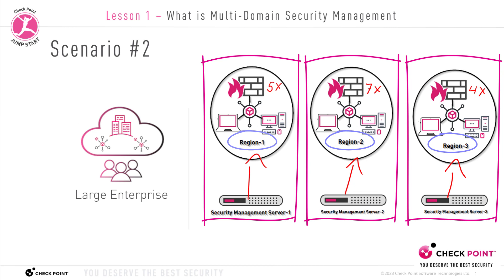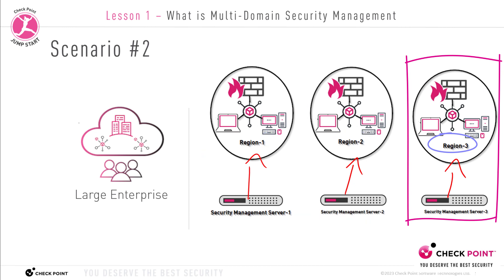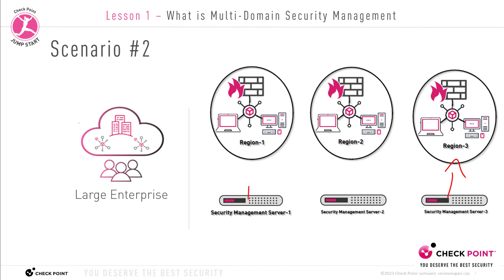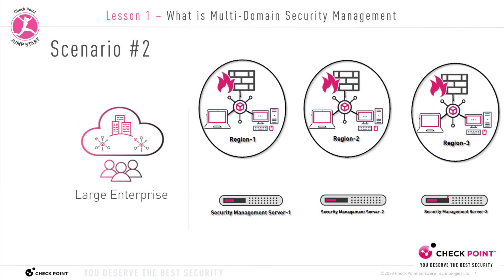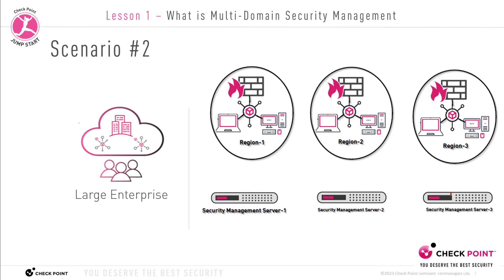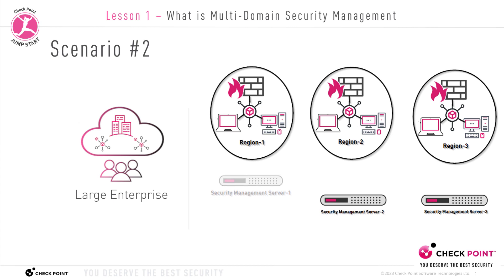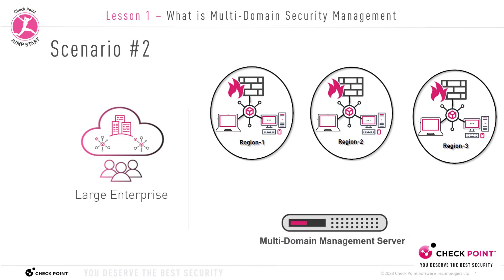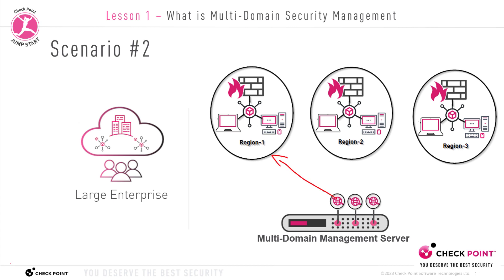To wrap this up, each security management server manages a few gateways belonging to the same domain: SMS 1 manages five gateways in the Region 1 domain, SMS 2 manages seven gateways in the Region 2 domain, and SMS 3 manages four gateways in the Region 3 domain. It's possible to imagine a company large enough to have a hundred or more security management servers managing thousands of gateways. For explanation purposes, we're using a company with three domains, which would require three separate security management appliances with multiple rack space and cooling needs — that's where the MDSM system comes in. We can replace three or more security management servers with one single hardware appliance running the Multi-Domain Security Management Server software.